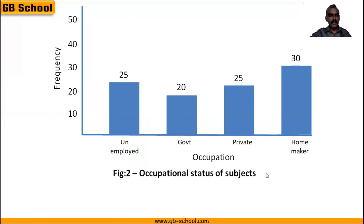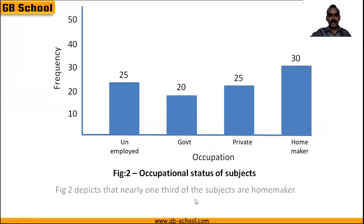Finally, we have to describe the data. Looking at the diagram, the majority value is 30, which is the maximum. Overall, out of 130 subjects, 30 are homemakers, which is almost one-third. So we can write: nearly one-third of subjects are homemakers.